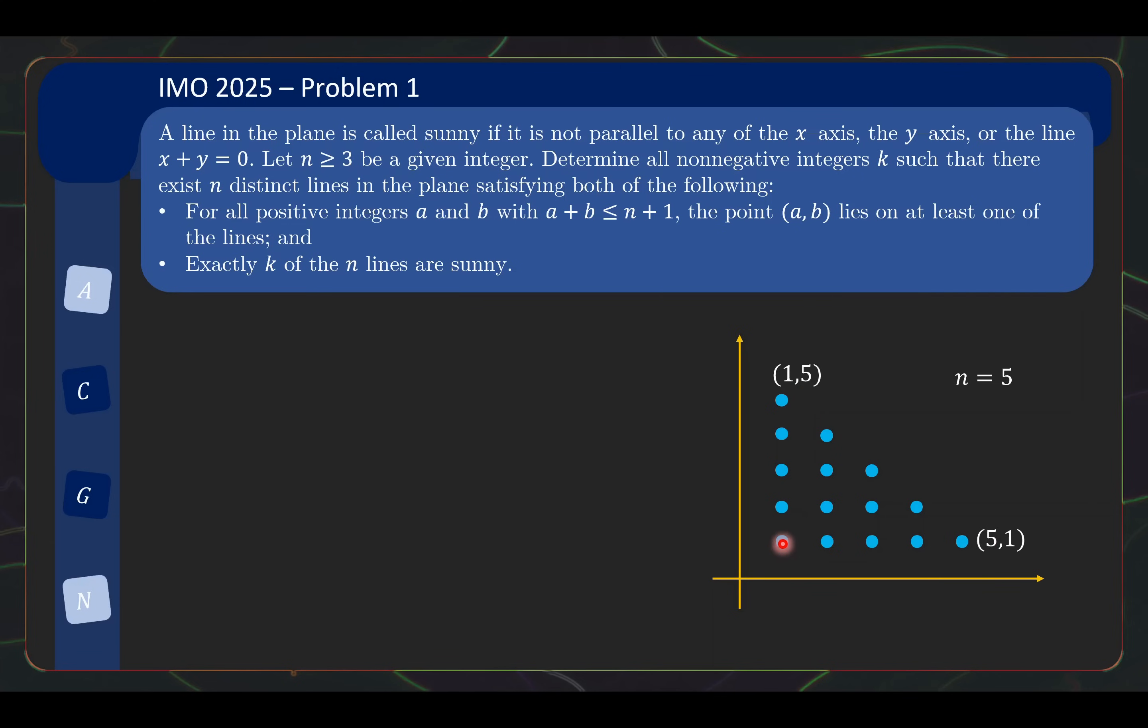These are basically points that lie in a right triangle like this. If you see 1,1 all the way to 5,1, indeed all this satisfy a plus b less than or equal to 6. So again, 1,1 to 1,5, same thing. 2,1 to 2,4, etc. So that's why we get this triangle structure over here.